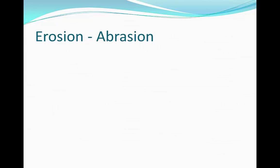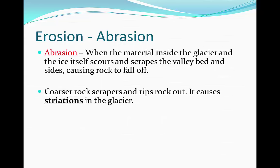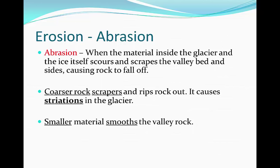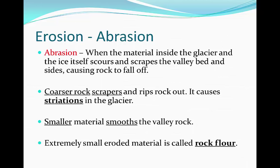Erosion. To begin with, we're going to look at abrasion. Abrasion in glaciers is exactly the same as it is in rivers. When the material inside the glacier and the ice scours and scrapes at the valley bed, bits of rock are going to fall off. Coarser rock scrapes and rips out, causing striations in the glacier. Smaller material smooths the valley rock, leaving a much smoother curve along the valley. Extremely small eroded material is called rock flour.